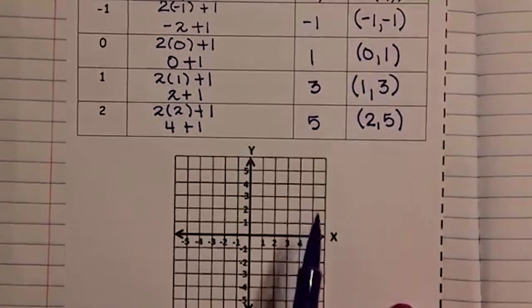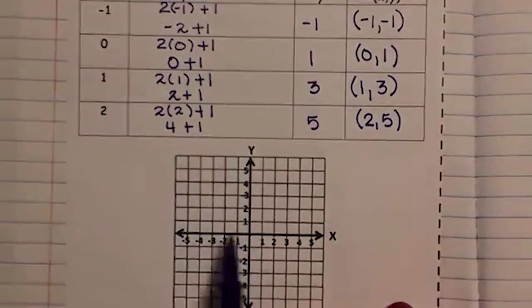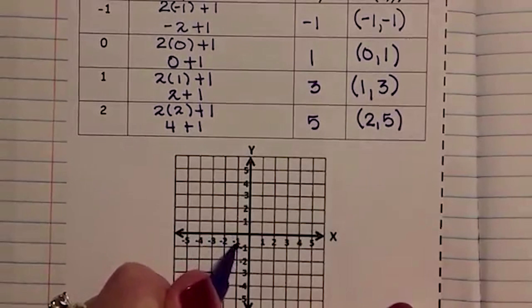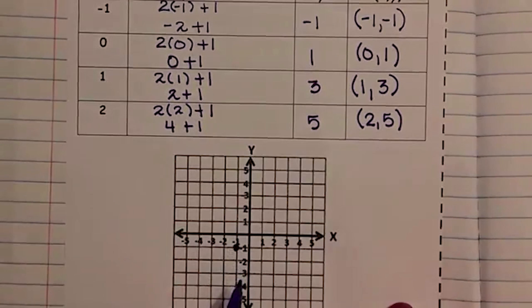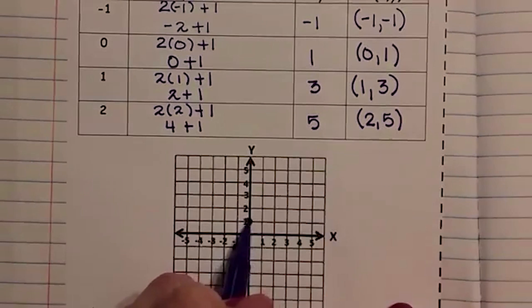Notice I have them labeled your y and your x. Remember, x always comes first. Negative 1, negative 1. Remember, he's a non-proportional linear. So it should be straight. If it's not a straight line, we might have made a mistake. So we have to pay attention.